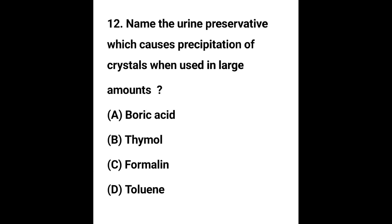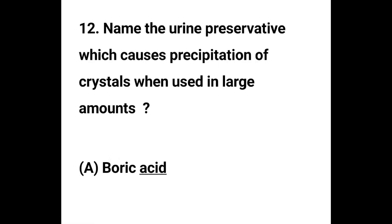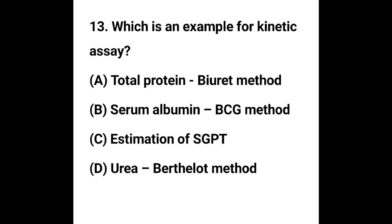Question number 12. Name the urine preservative which causes precipitation of crystals when used in large amounts: Option A - Boric acid, Option B - Thymol, Option C - Formalin, Option D - Toluene. The correct answer is Option A, Boric acid. Boric acid will cause precipitation of crystals when used in large amounts.